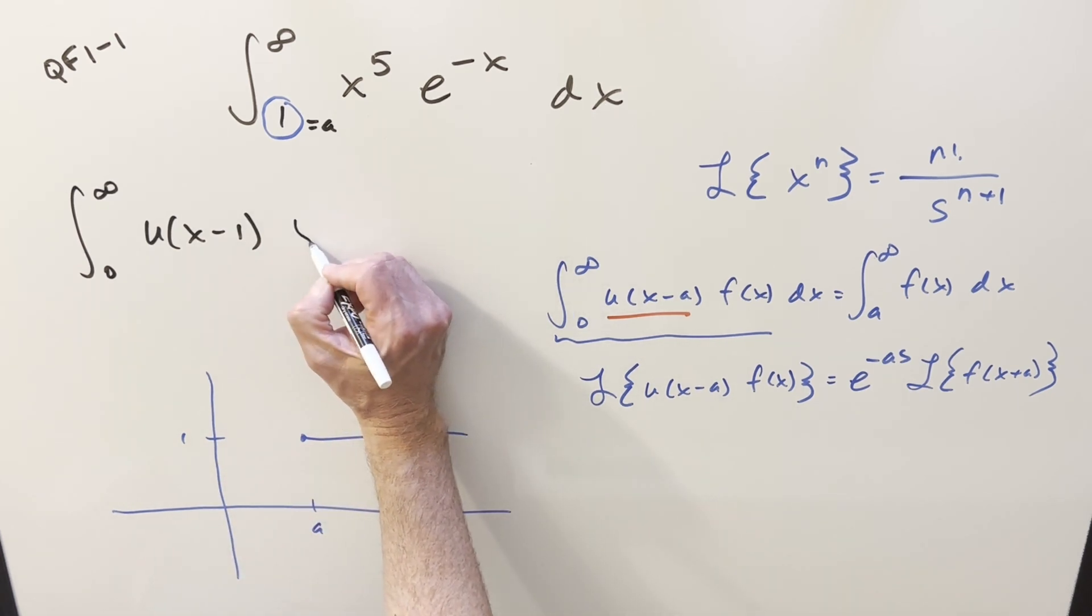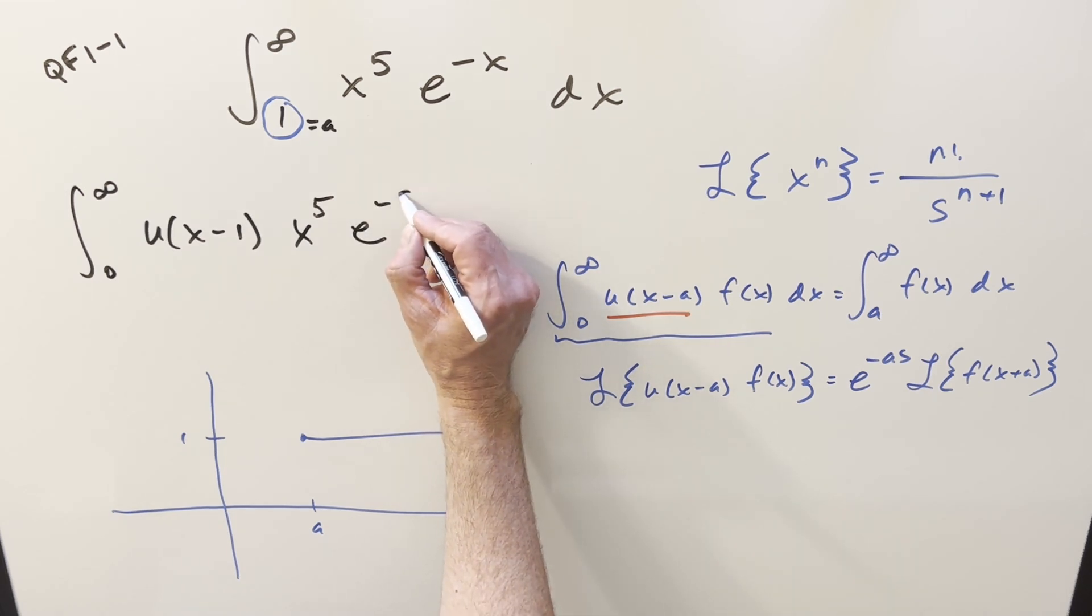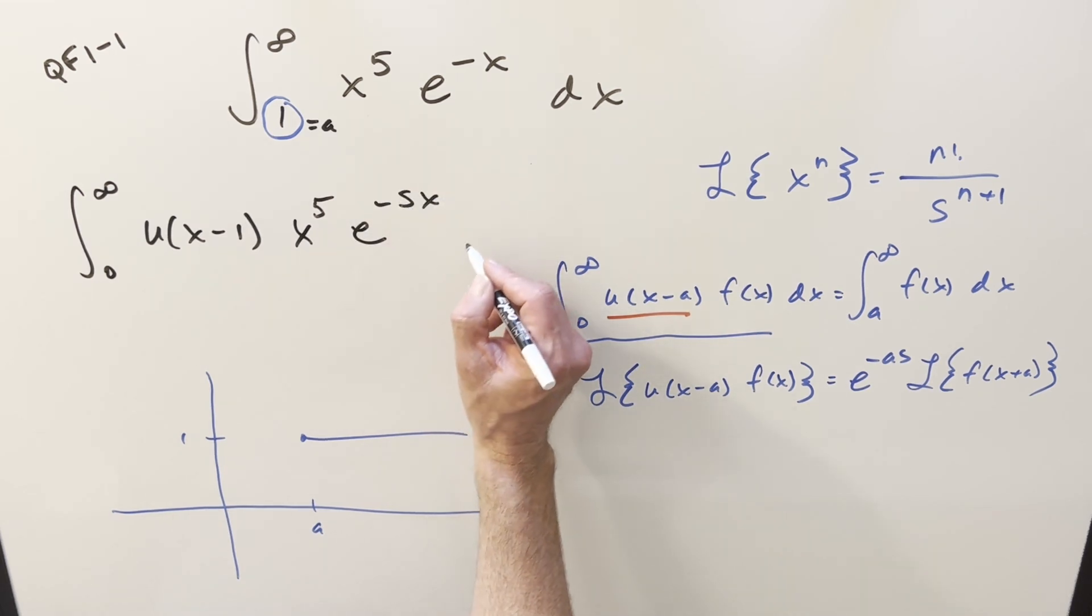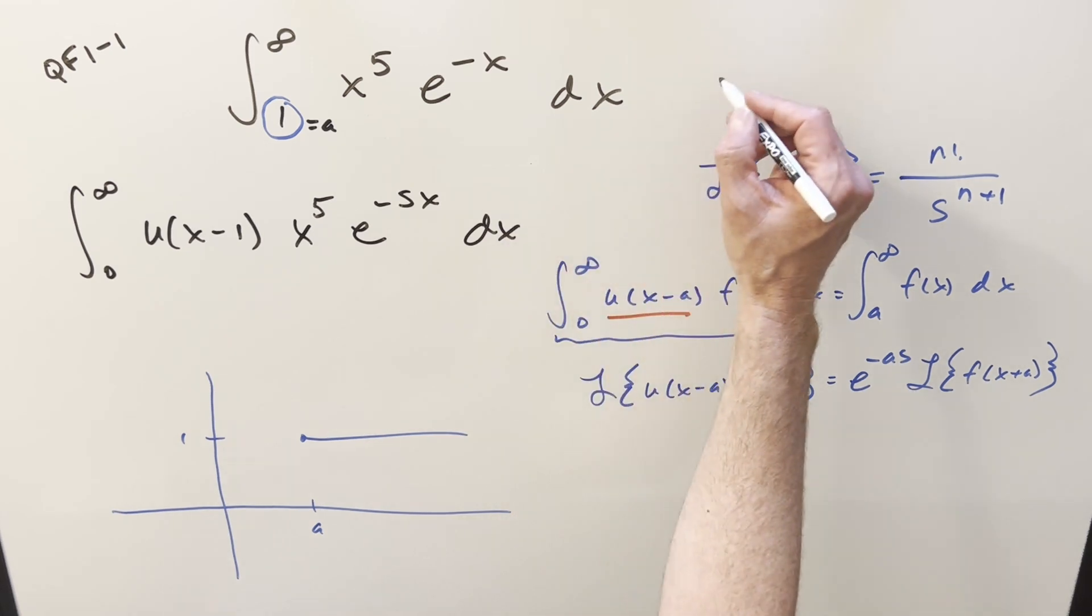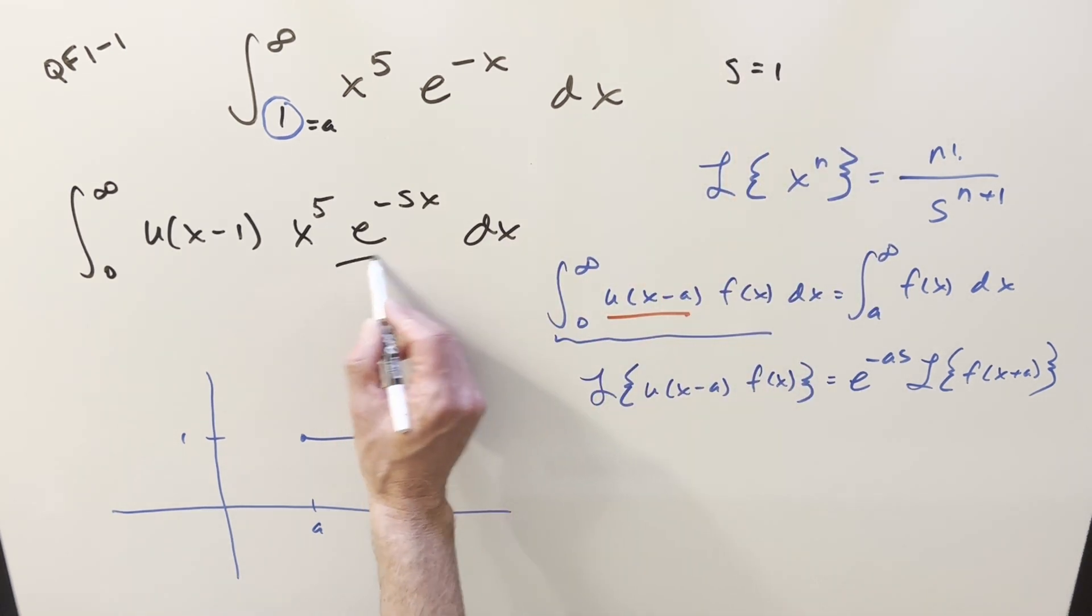Our function here is going to be x to the 5th. And then one thing on e minus x, let me just change this a little bit and create a parameter, an s on there, where we're just going to know that s is going to be equal to 1. I'm doing this just to set up the Laplace transform, but we'll go back and plug in at the end.